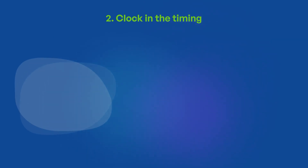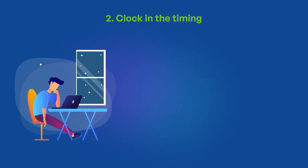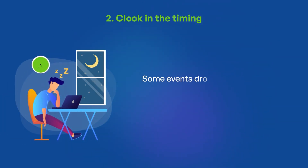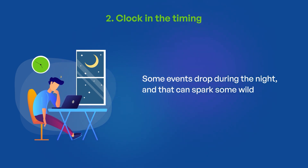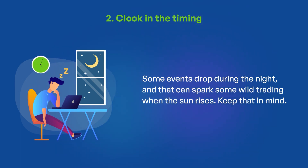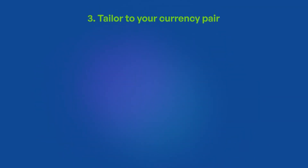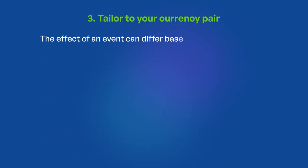Number two: clock the timing. Some events drop during the night, and that can spark some wild trading when the sun rises — keep that in mind. Number three: tailor to your currency pair. The effect of an event can differ based on the currency pair you're playing with.